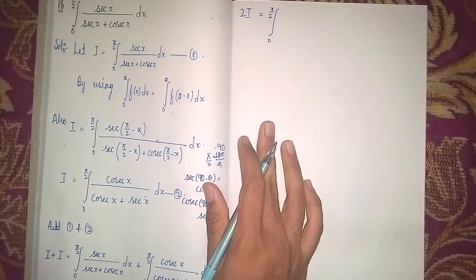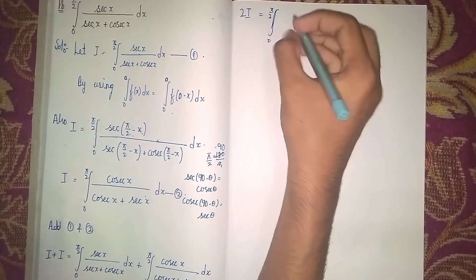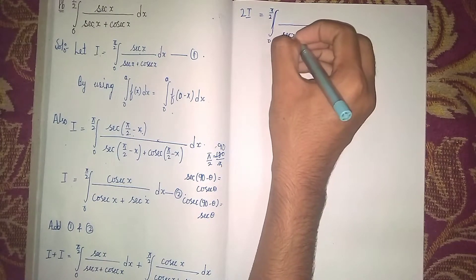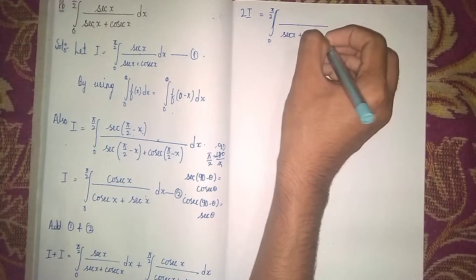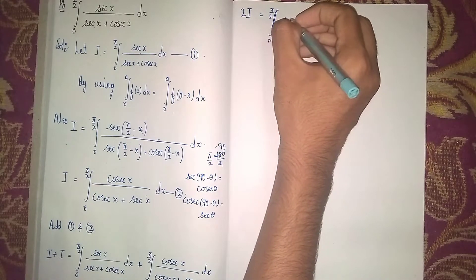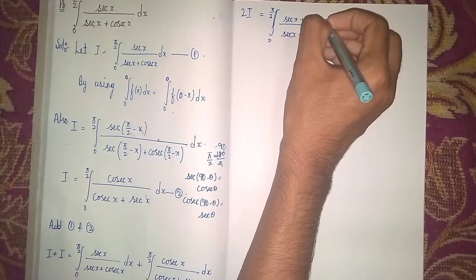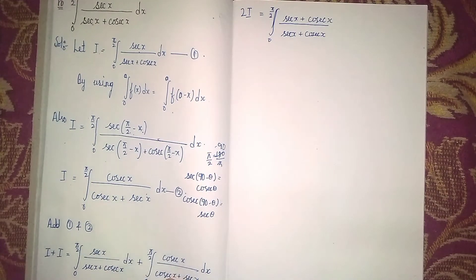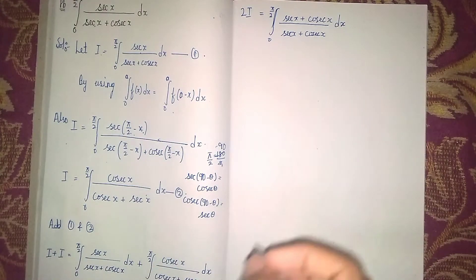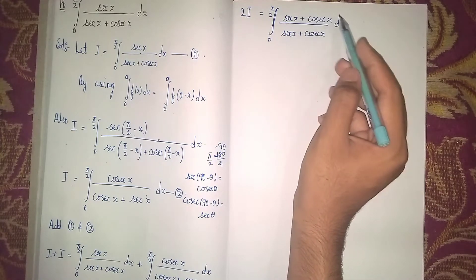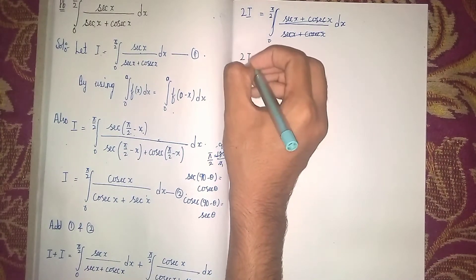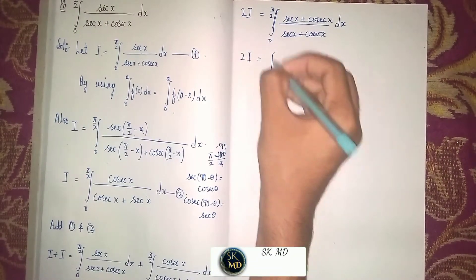So 2I equals the integral from 0 to π/2 of (sec(x) + csc(x)) divided by (sec(x) + csc(x)) dx. We can see that the numerator and denominator are the same, so they cancel. Therefore 2I equals the integral from 0 to π/2 of 1 dx.